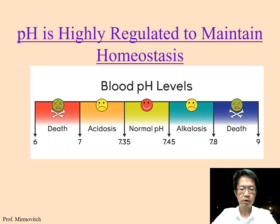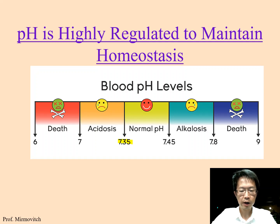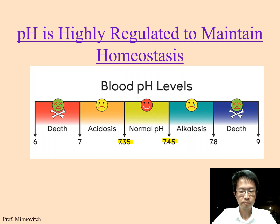pH is highly regulated to maintain homeostasis. Our blood is a buffer because we want to maintain our blood at a certain range — 7.35 to 7.45 — so that chemical reactions can continually and stably carry out in our blood and body. The maintenance of blood pH is an example of homeostasis.